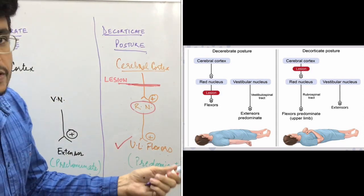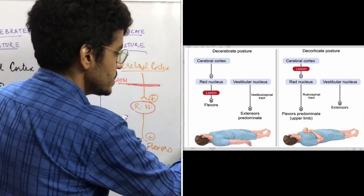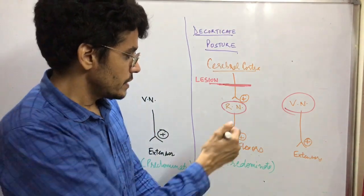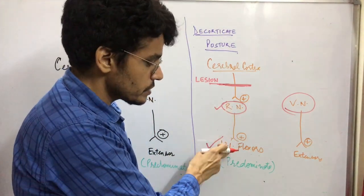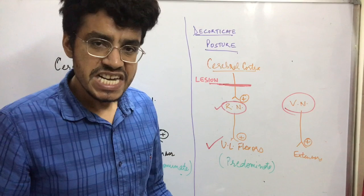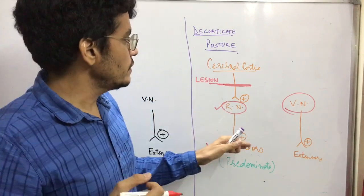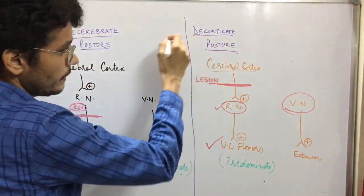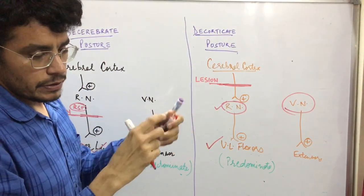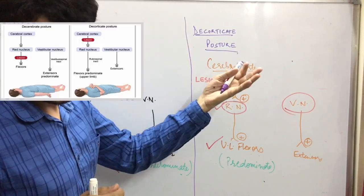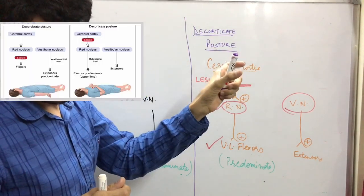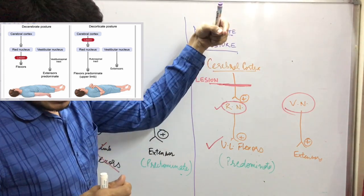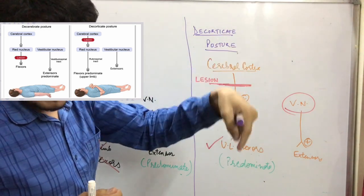But the neuron from the red nucleus to the upper limb flexor is still intact and may get stimulated from other connections. So it will be more predominant for the upper limb flexor. The vestibular nucleus is still acting on the rest of the body's extensors. The red nucleus connection to the upper limb flexor is intact, so there will be upper limb flexion — this is called decorticate posture.